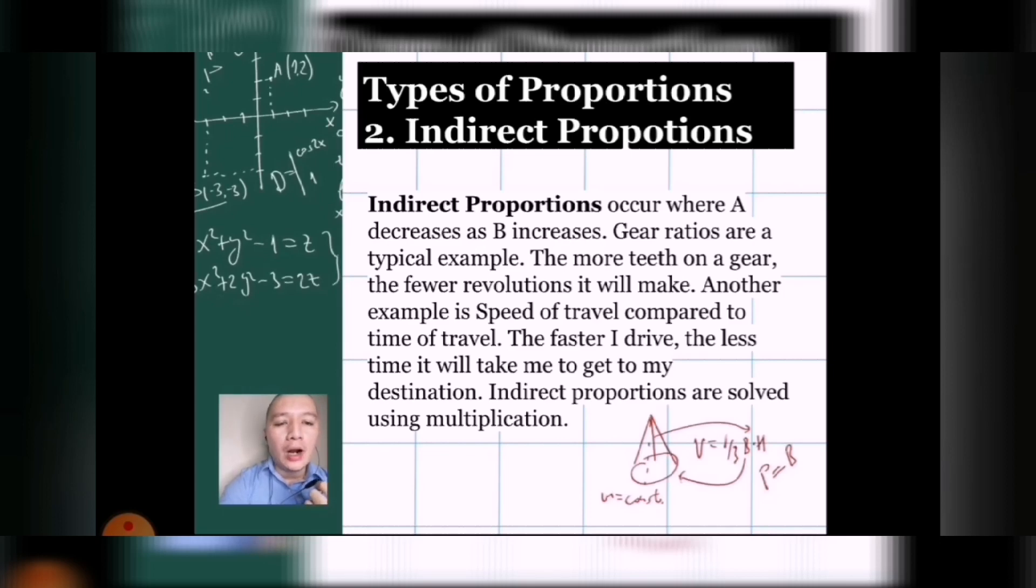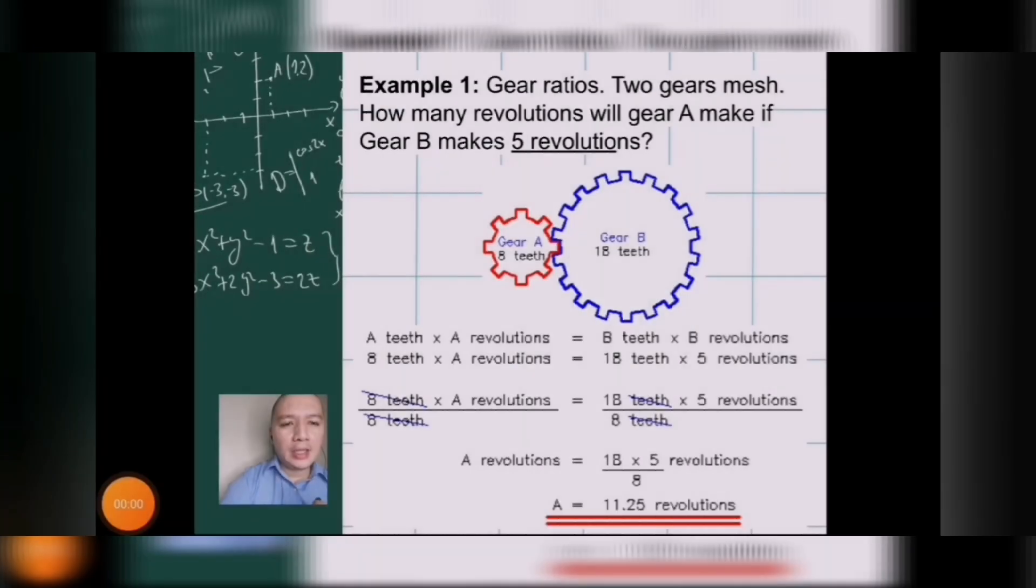Gear ratios are a typical example. The more teeth on a gear, the fewer revolutions it will make. Another example is speed of travel compared to time of travel. The faster I drive, the less time it will take me to get to my destination. Indirect proportions are solved using multiplications. It's an example we can use for indirect proportions.